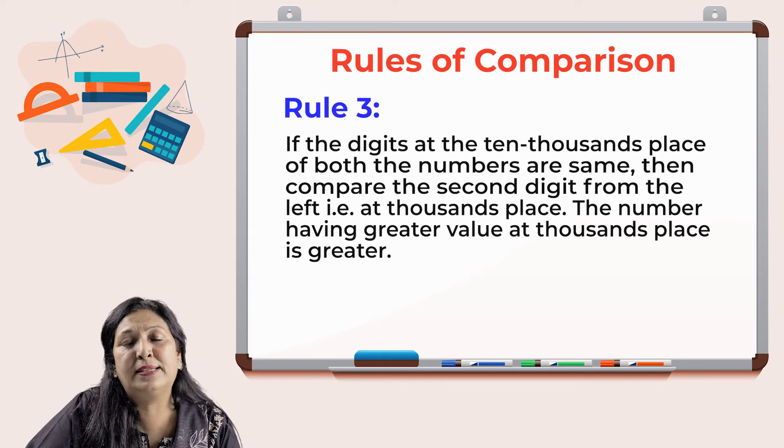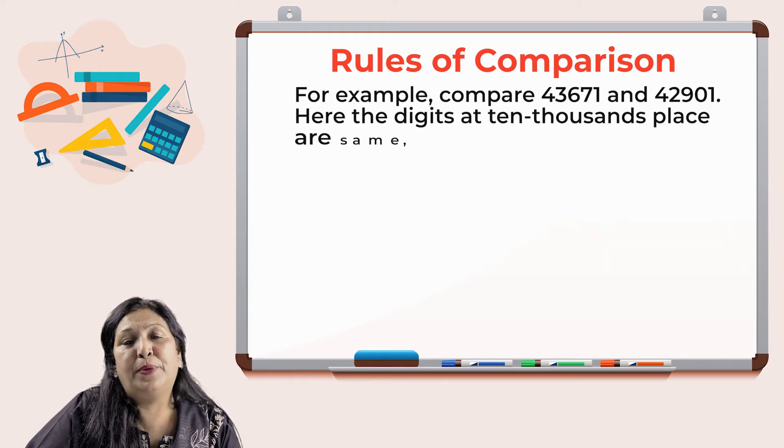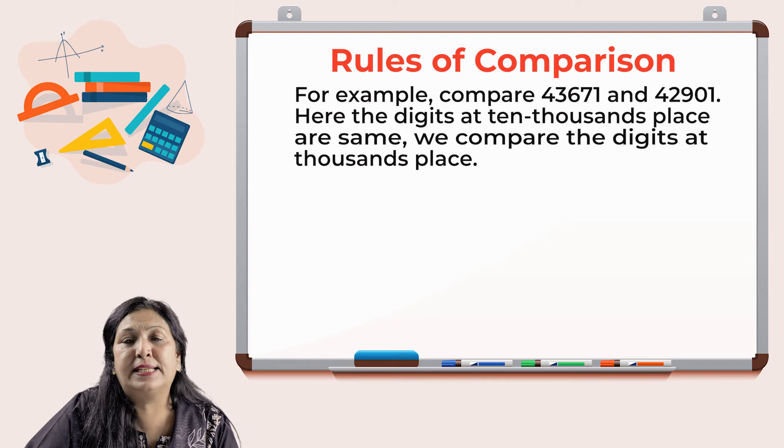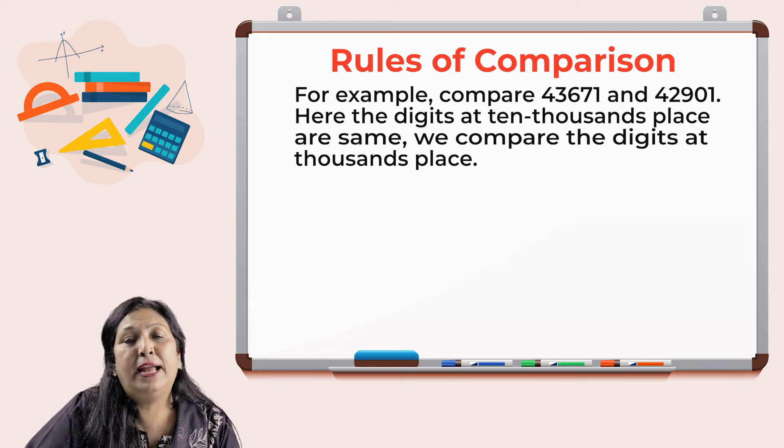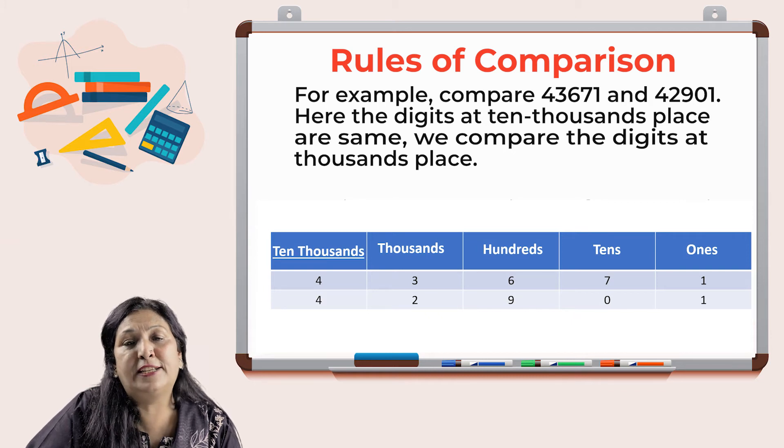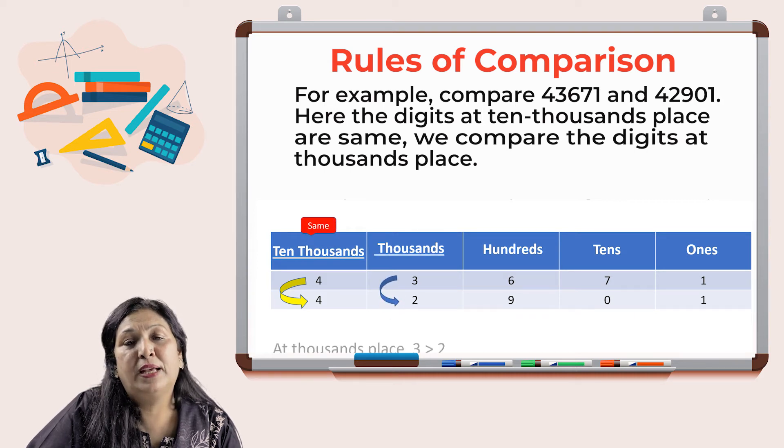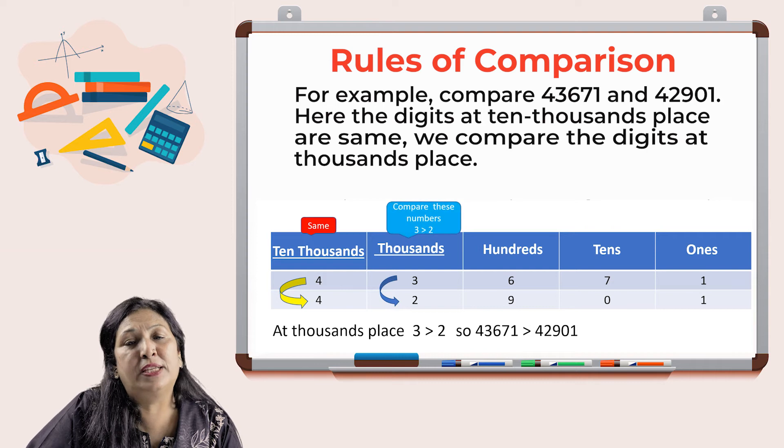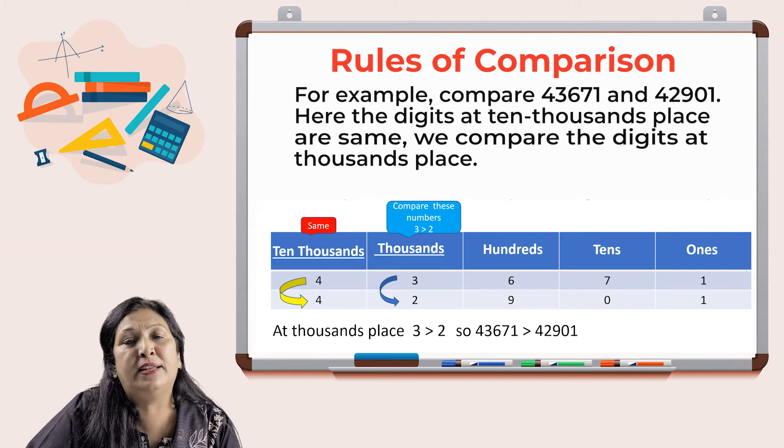Let's compare 43,671 and 42,901. Now look at ten thousands place. Both the numbers have same digit, that is four. Now we will compare the digits at thousands place. As three is greater than two, so 43,671 is greater than 42,901.